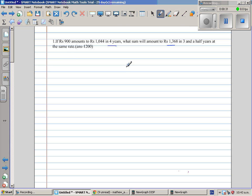There are two situations here. Let's first look at the first situation. Here we can see that the principle is rupees 900, the amount is 1044. Amount is principle plus interest. The number of years is four years. We don't know the rate.